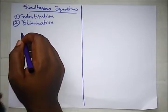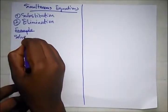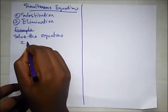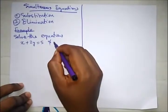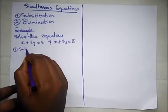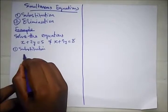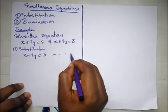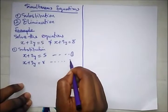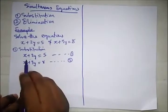So let's say, for example, solve the equations x + 2y = 5 and x + 3y = 8. Here, applying substitution method first. How do we do it? We just take x + 2y = 5 as our equation 1, and x + 3y = 8 as our equation 2. So here, what do we do? We make x from equation 1 the subject of formula.